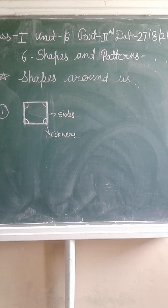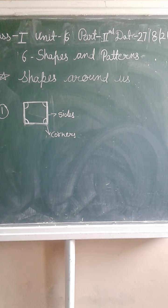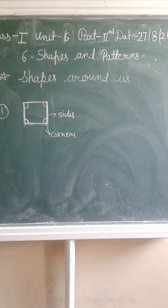Tiles on the floor at home — look at them, all their sides are equal. So, tiles are an example of a square shape. Similarly, rectangle is the second shape.